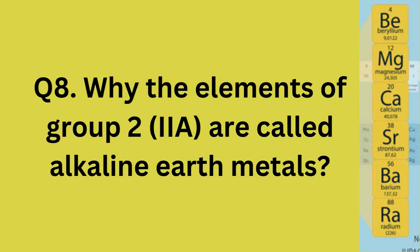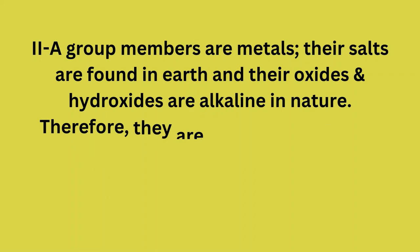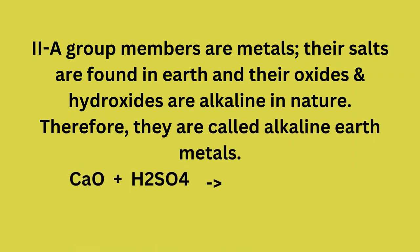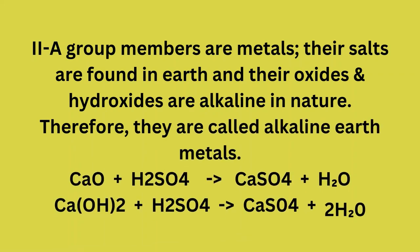Question 8: Why are the elements of group 2A called alkaline earth metals? Group 2A members are metals, their salts are found in the earth, and their oxides and hydroxides are alkaline in nature. Therefore, they are called alkaline earth metals. For example: Ca(OH)2 + H2SO4 → CaSO4 + H2O, and Ca(OH)2 + H2SO4 → CaSO4 + 2H2O.